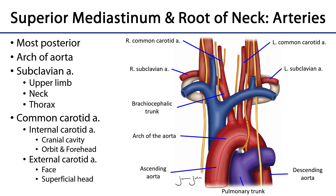The common carotid arteries bifurcate — with a lot of variation, typically at about the level of C3–C4 — into internal carotid arteries, which continue up to the base of the skull and enter the carotid canal. Once inside the skull, these internal carotid arteries serve the contents of the cranial cavity, namely the brain and spinal cord. They also serve the orbit, eye, and the periorbital region, especially the forehead.